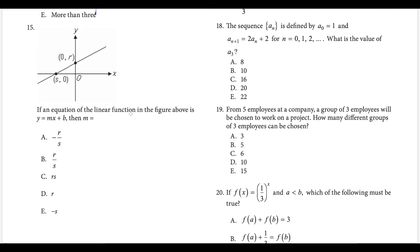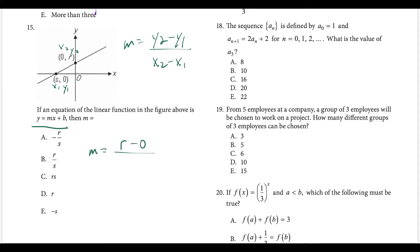Question fifteen: we have the graph of a linear function, y equals mx plus b, and we want to find m — the slope. The slope formula is y2 minus y1 over x2 minus x1. Labeling the points as (x1, y1) and (x2, y2) and plugging in: m equals r minus 0 over 0 minus s, which gives r over negative s, the same as negative r over s. This gives us choice A.